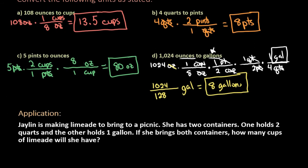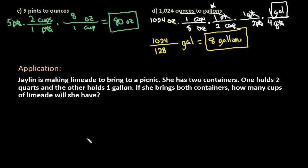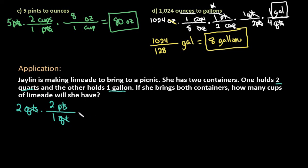I just wanted to look at a quick application. Jalyn is making limeade to bring to a picnic. She has two containers — one holds two quarts and the other holds one gallon. If she brings both containers, we want to know how many cups of limeade she will have. The first thing I want to do is convert the two quarts to cups. There's not a direct conversion, so I would first go from quarts to pints: there are two pints in one quart. Then go pints to cups: there are two cups in one pint. So I would have 2 times 2 is 4, times 2 is 8 cups. The first container holds 8 cups.